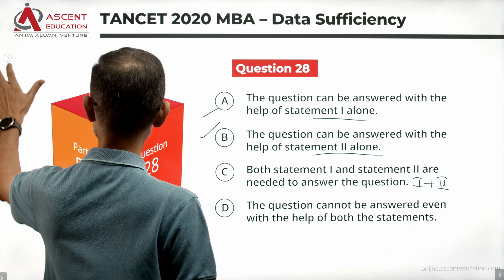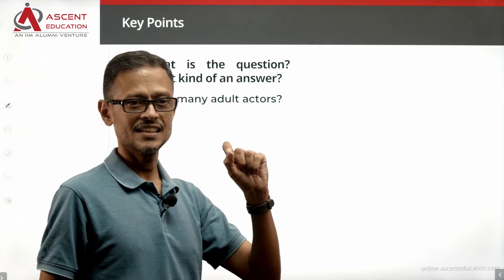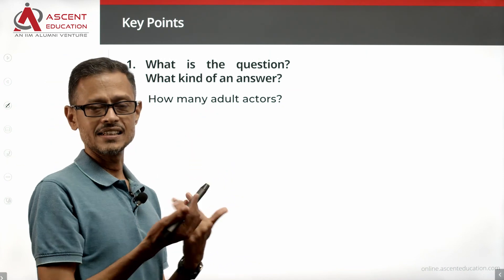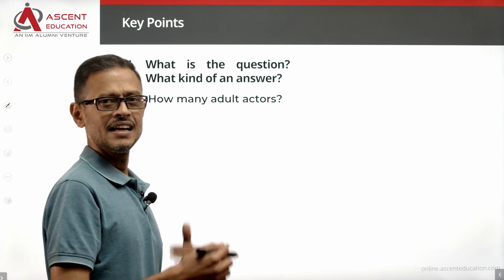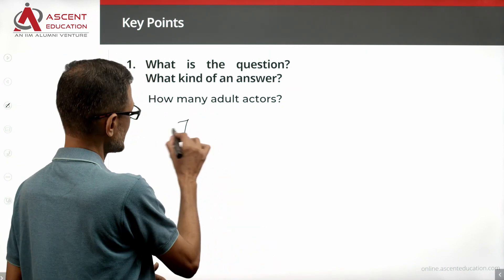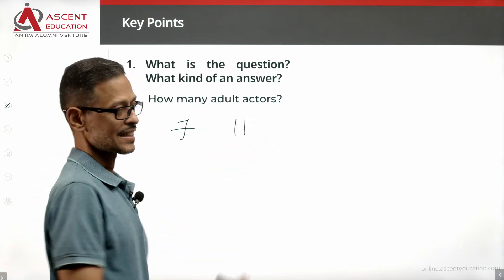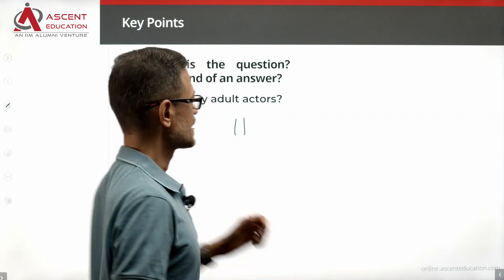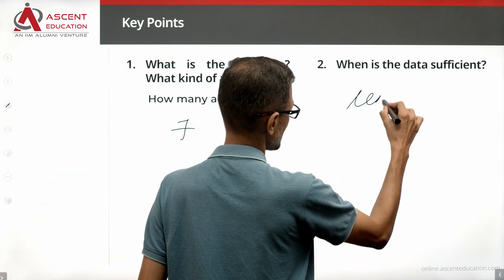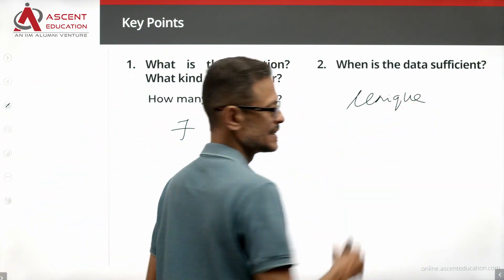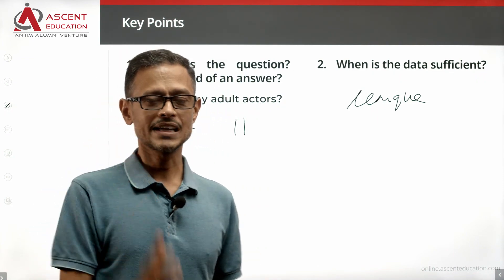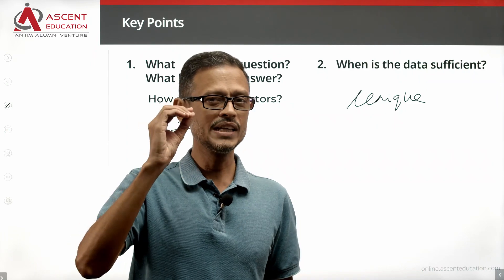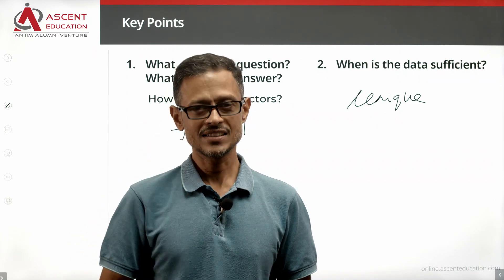The question is: among 24 actors, how many adult actors are there in this school play? This is a number answer — it could be 7 adult actors or 11 adult actors. When is the data sufficient? The data is sufficient when we have a unique value — one specific number of adult actors. Then the data is sufficient.